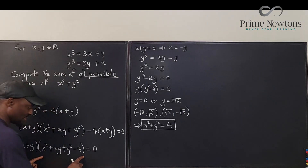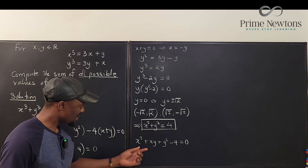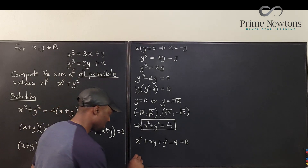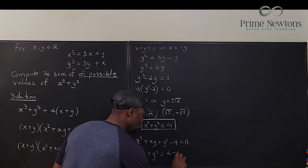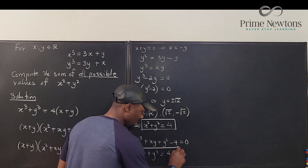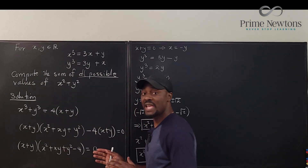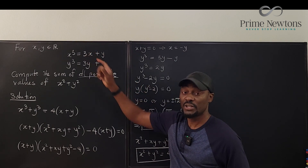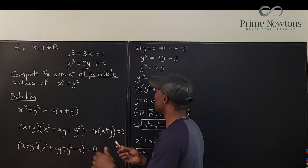The second factor gives x² + xy + y² = 4, which means x² + y² = 4 − xy. Let's box this result and set it aside. Now let's also try subtracting the two equations, because that will give us the difference of two cubes and another useful factoring.